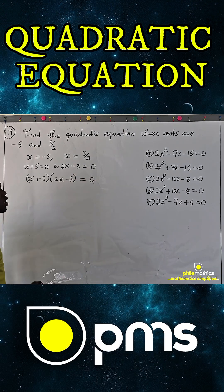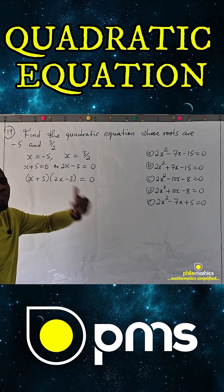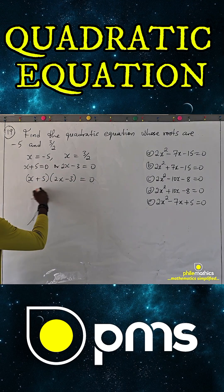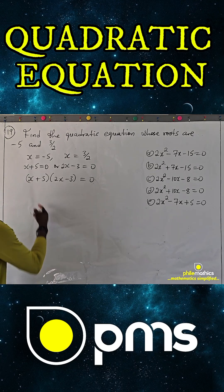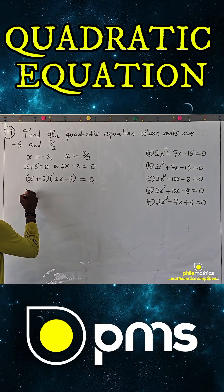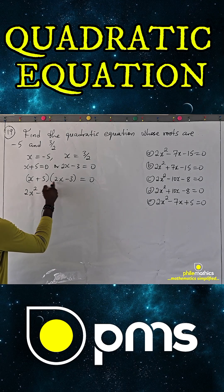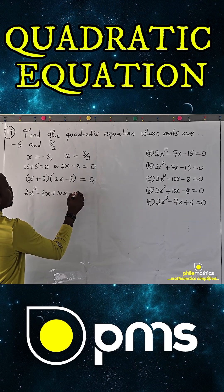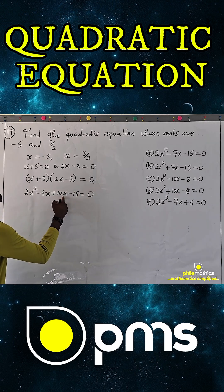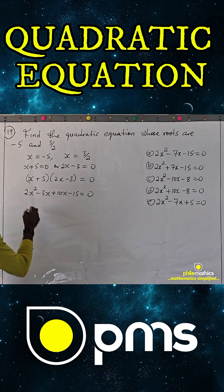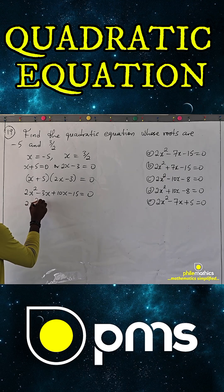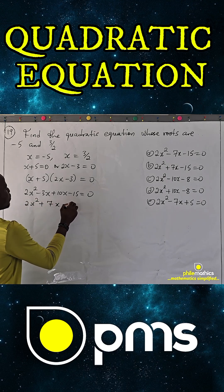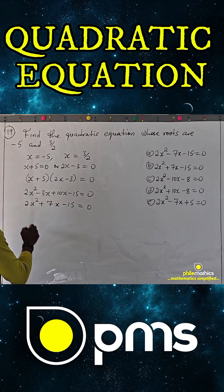This is like reverse engineering — you know how to multiply two factors. x times two x is two x squared, x times minus three is minus three x, five times two x is plus ten x, and five times minus three is minus fifteen. Combining the like terms, ten x minus three x is seven x, giving us two x squared plus seven x minus fifteen equals zero.